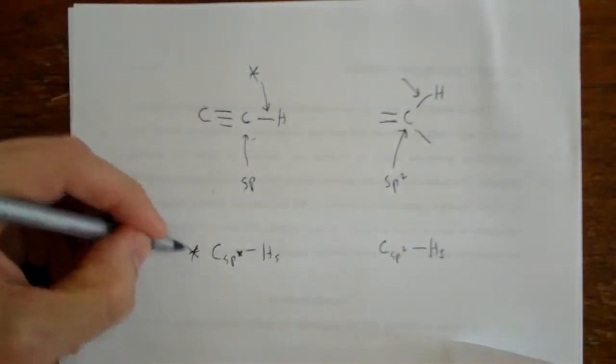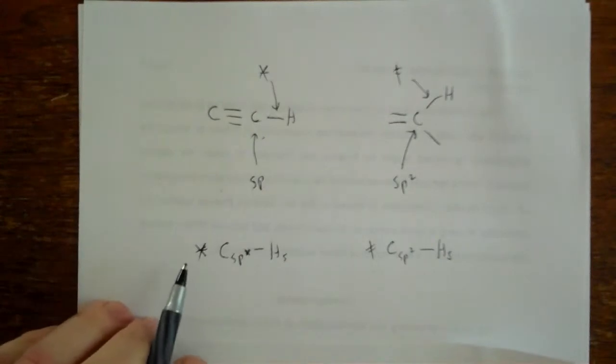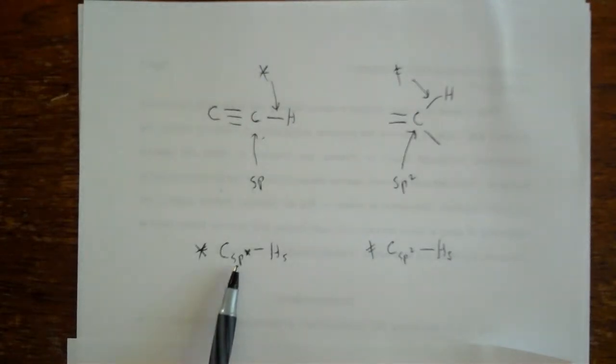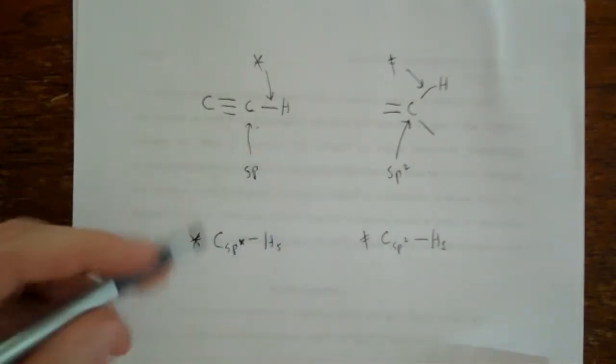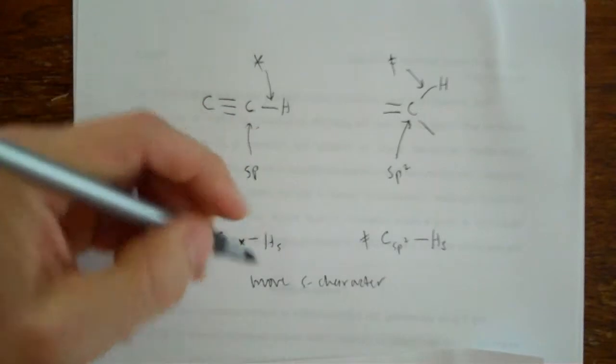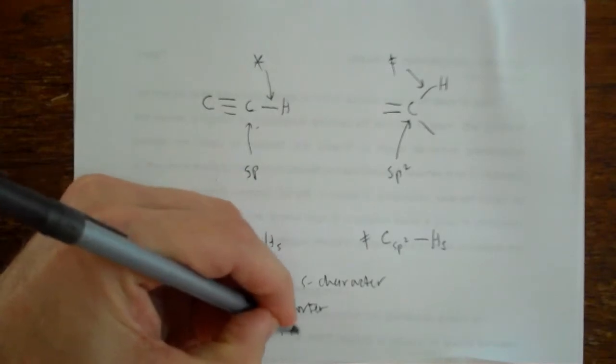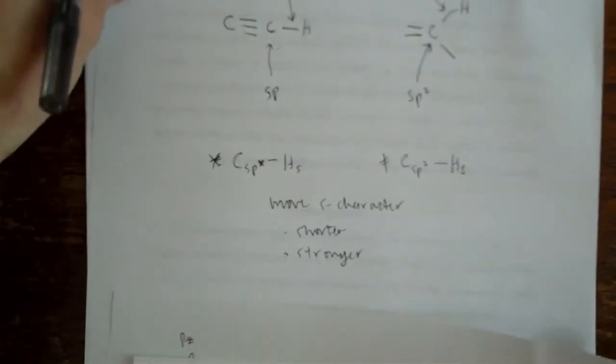Star, star, double dagger, double dagger. Now, what's that mean about these bonds? That means this bond's going to be shorter because it has more s character. Right? This one's 50% s. That's 100% s. This is 33% s. That's 100% s. So this bond is more s character, and therefore it's shorter and stronger. The book has a nice explanation of why that makes a stronger bond. Let me not get into that right now. That's just touching on objective number two.